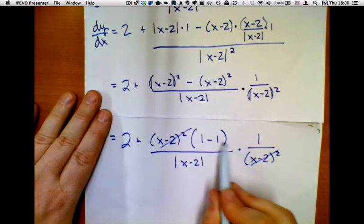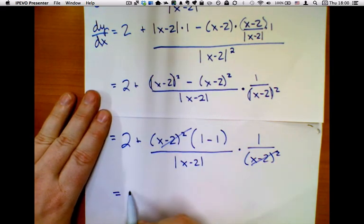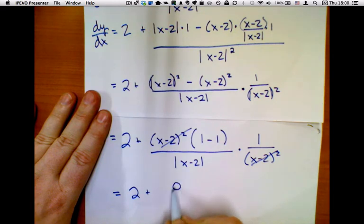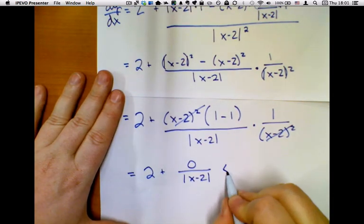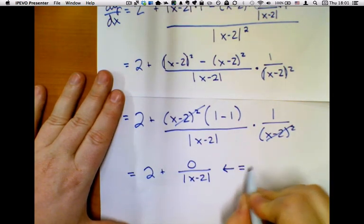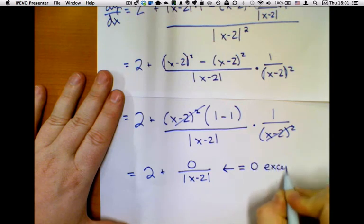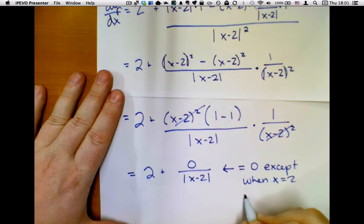But I have 1 minus 1. Interesting. So what I have is 2 plus 0 divided by the absolute value of x minus 2. This equals 0 except when x equals 2.